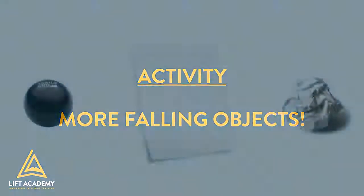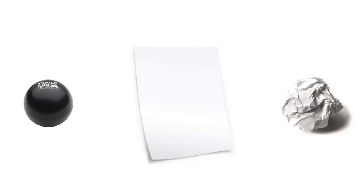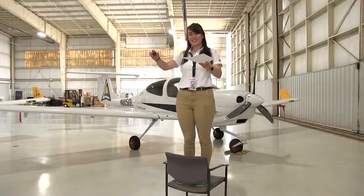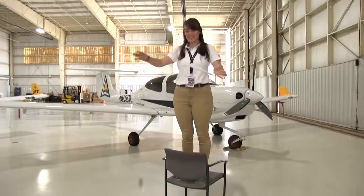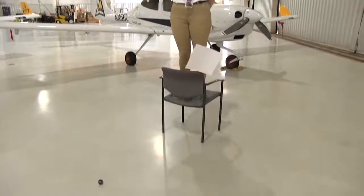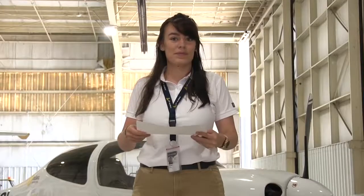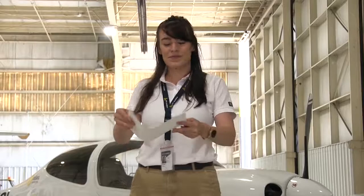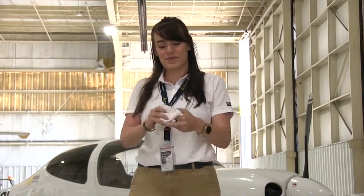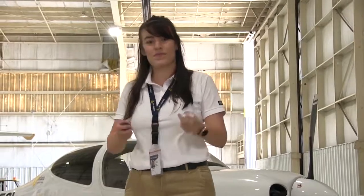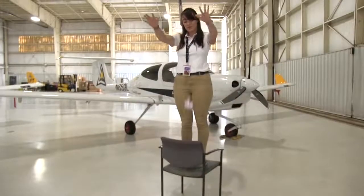For this next activity, all you will need is a small ball and a piece of paper. First, drop a sheet of paper horizontally and the golf ball from the same height at the same time. Now, crumple the sheet of paper into a tight ball. Next, drop the golf ball and the crumpled sheet of paper from the same height at the same time.